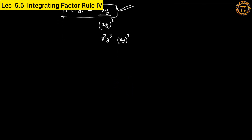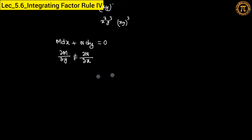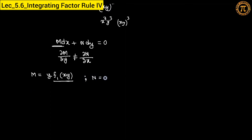Suppose we have an equation M dx + N dy = 0. Since we are going to find the integrating factor, this equation will be a non-exact equation, meaning ∂M/∂y is not equal to ∂N/∂x. Now, rule number 4 states: if you can write M in the form y · f₁(xy) — that is, take y as common from M and the remaining part is a function of product xy — and similarly, take x as common from N so the remaining part is a function of product xy.